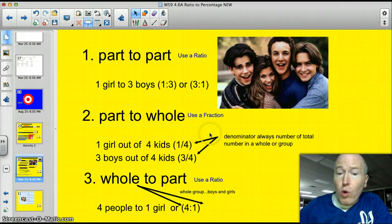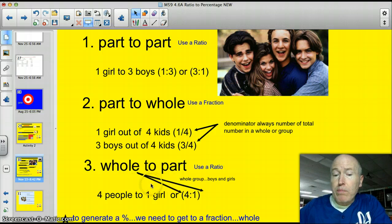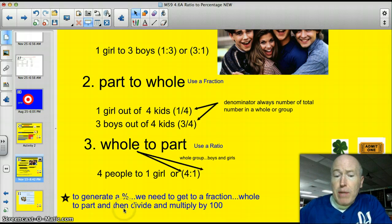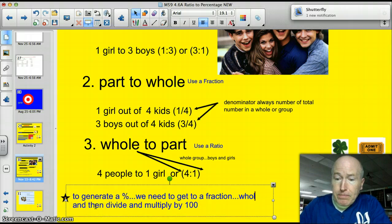Now, I can also talk part to whole, and this is where using a fraction is appropriate. I can say that it's one girl out of four kids. And again, that denominator here is telling me that that's the number of people in an entire group. I could reverse it, too, and I could say that there are three boys out of four kids. Once again, the denominator is the number of the total group. The numerator signifies that specified group. In this case, down here, it's boys. Sometimes we use whole to part. You could also say that there are four people to one girl. It's almost like a reverse fraction, or the reciprocal of it. But to generate a percentage, we really need to get to a fraction, part to whole, and then we need to divide and multiply.